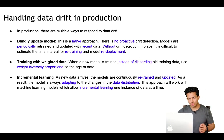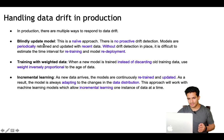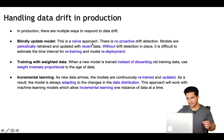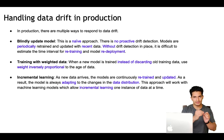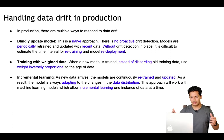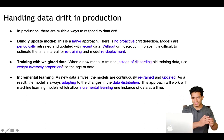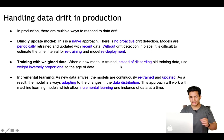What is the best way to handle data drift in production? There are multiple ways to respond. One is blindly updating the model — the naive approach where there is no proactive drift detection. Models are retrained at periodic time intervals with recent data. Without drift detection in place, we will never know what the right retraining interval should be or when the drift has occurred. The second method is training with weighted data, which is similar to blindly updating the model, but instead of discarding old training data, we give it less weight — the weight is inversely proportional to the age of the data.